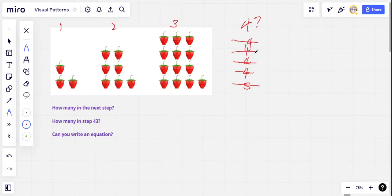So I think that's the pattern. And let's see, that would make four times four, 16, plus five, that'd be 21. So I'm going to predict that there will be 21 strawberries in the next step.